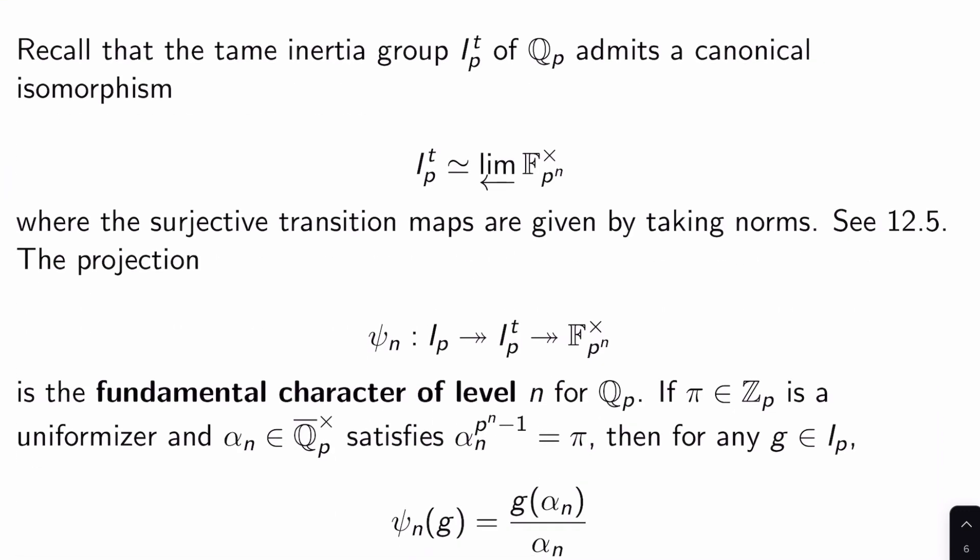So first of all, we need to recall what fundamental characters are, although it's not clear to me that I've actually covered this before. Recall that the tame inertia group, I_P^t of Q_P, admits a canonical isomorphism to the inverse limit over N of F_{p^n}^×, where this is the field of p^n elements, non-zero elements, where the surjective transition maps are given by taking norms. You can see, I guess, 12.5, we talked about this. I don't really remember doing that, but I'm sure, why not?